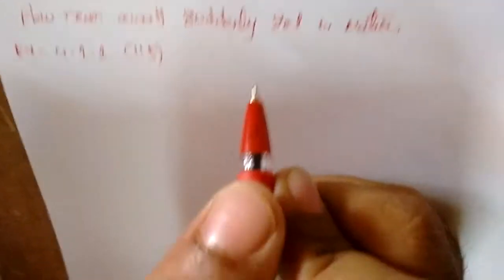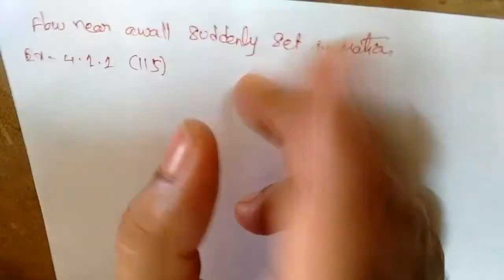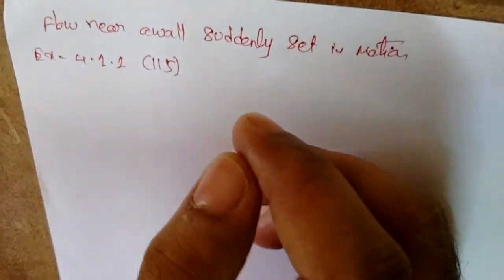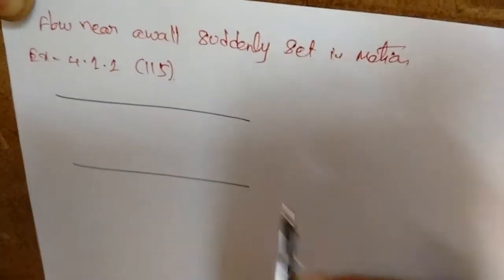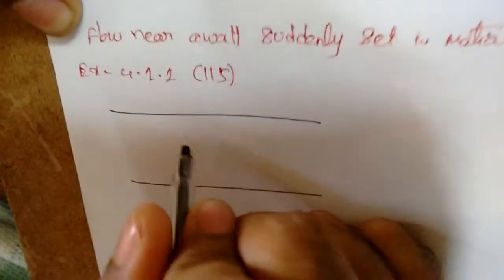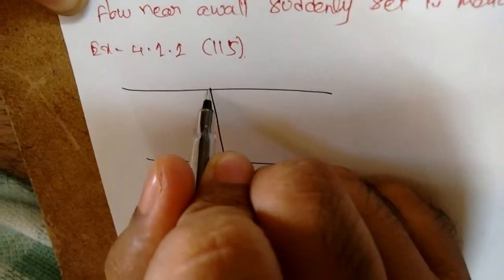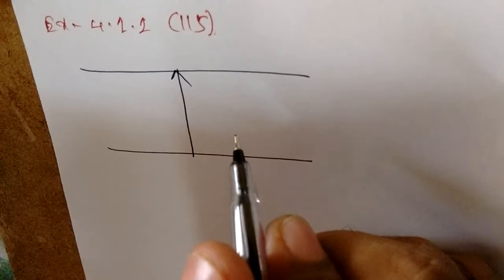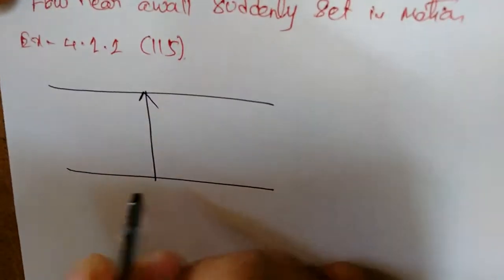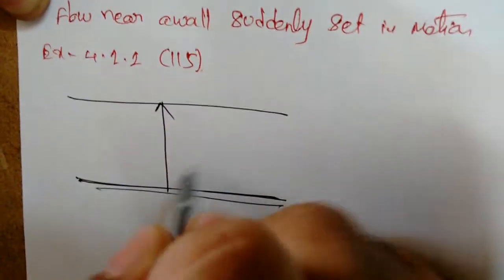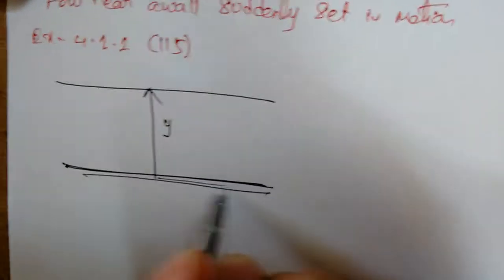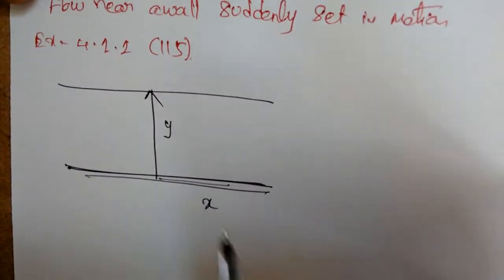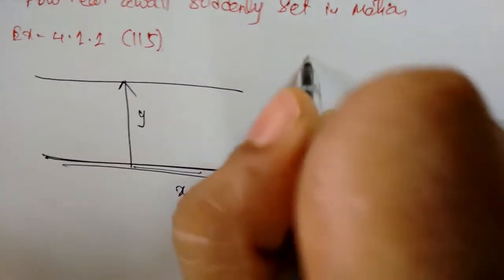In this unsteady state problem we need to discuss how the velocity profile changes with respect to time. Consider a wall — this is the wall — with the y-direction (radial direction) and the x-direction defined accordingly.